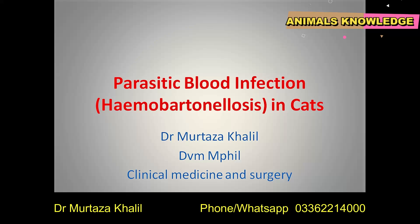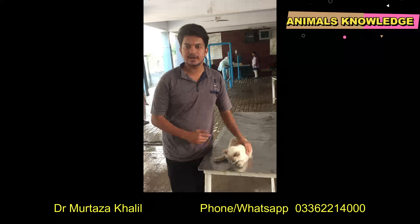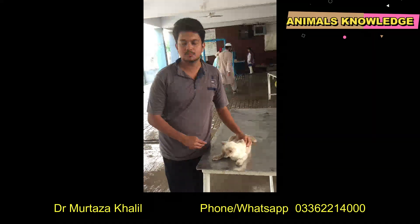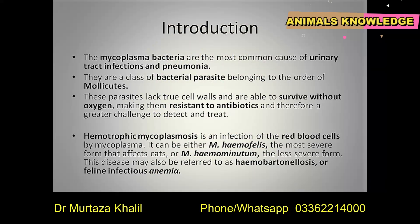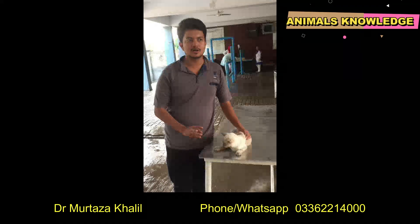First, an introduction of the disease. The mycoplasma bacteria are the most common causes of urinary tract infection and pneumonia. They are generally a bacterial parasite belonging to the order of Mollicutes. These parasites lack a true cell wall and are unable to survive without oxygen.